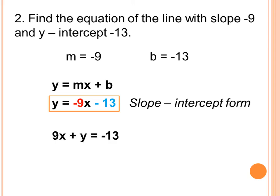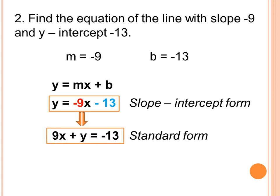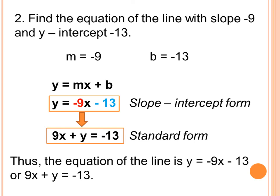This equation can also be written as 9x plus y is equal to negative 13, which is in standard form of the linear equation. The equation of the line is y is equal to negative 9x minus 13, or 9x plus y is equal to negative 13. It's that simple — when the given are slope and y-intercept, just substitute them into the slope-intercept form.